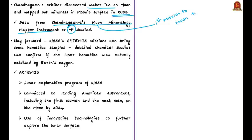The spacecraft was orbiting around the moon at a height of 100 kilometers from the lunar surface and was looking for chemical, mineralogical, and photogeological mapping of the moon. For this purpose, the spacecraft carried 11 scientific instruments built by India, USA, UK, Germany, Sweden, and Bulgaria.